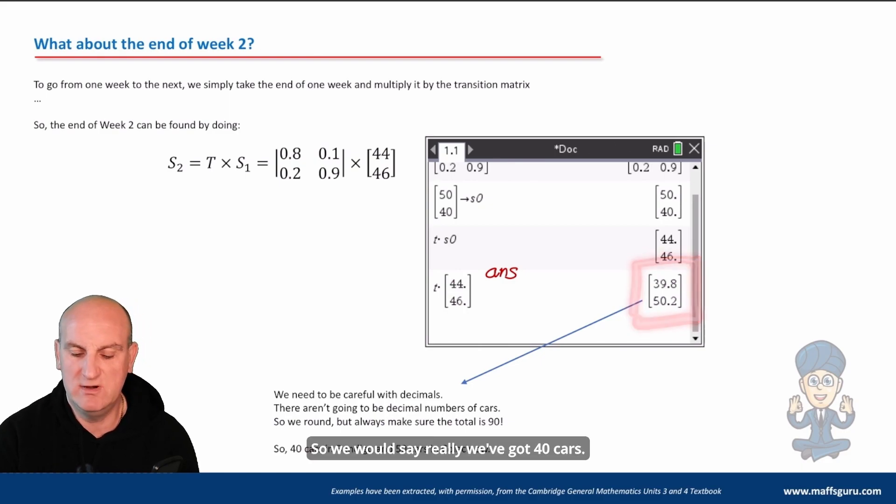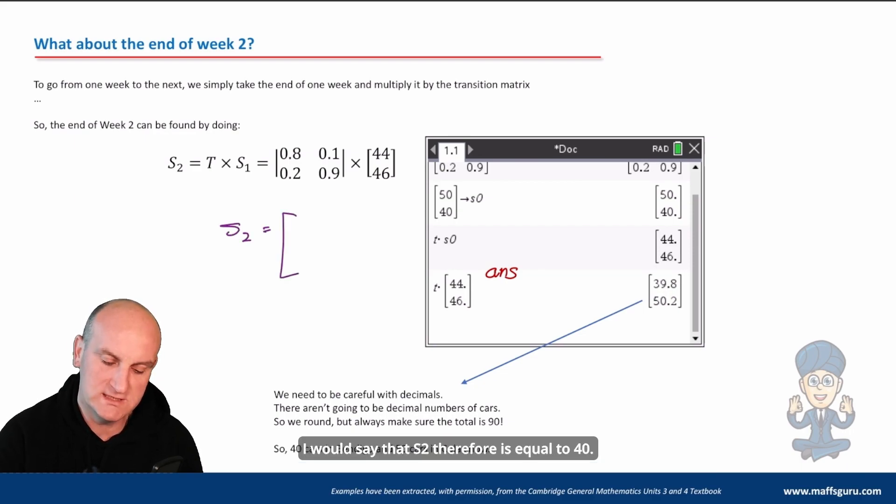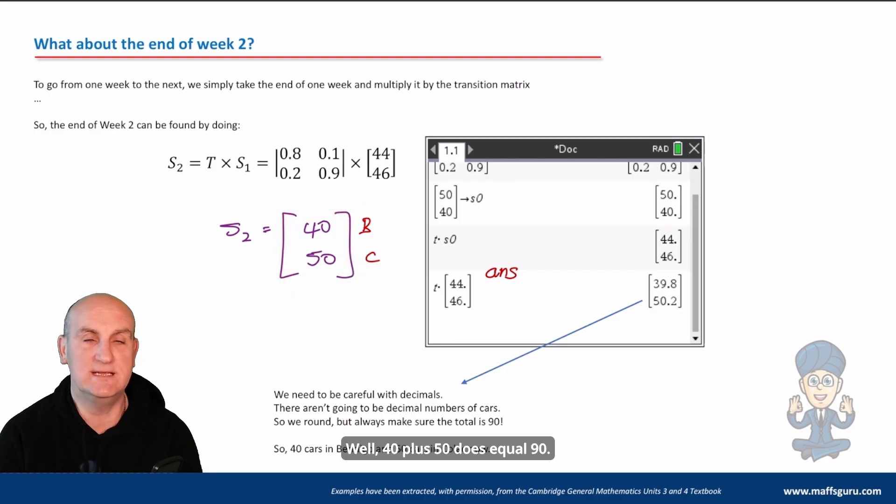So we would say really we've got 40 cars. So if I was going to write this down as an answer, I would say that S₂ therefore is equal to 40. I've rounded that one up, so I'd have to round the next one down, and 50. Well, that's okay. Again, as a check, remember I always do my check to make sure that they add together. Well, 40 plus 50 does equal 90. Yay, the world goes crazy.